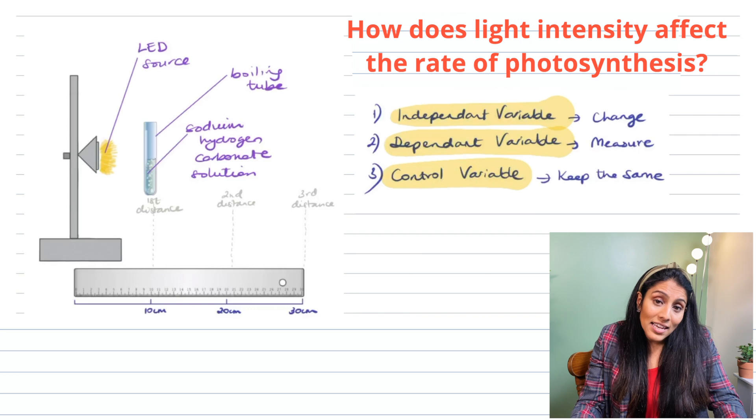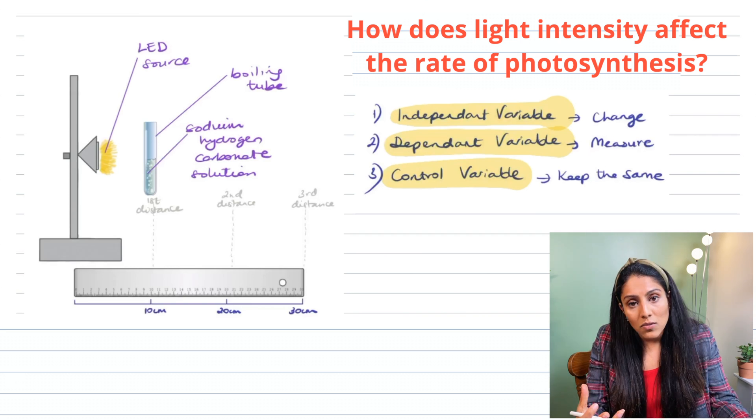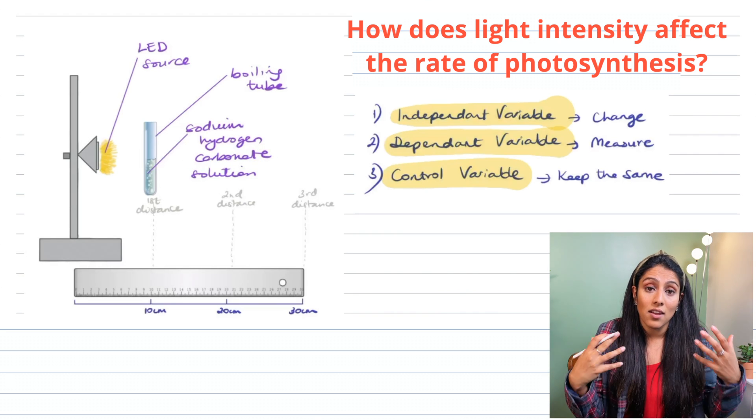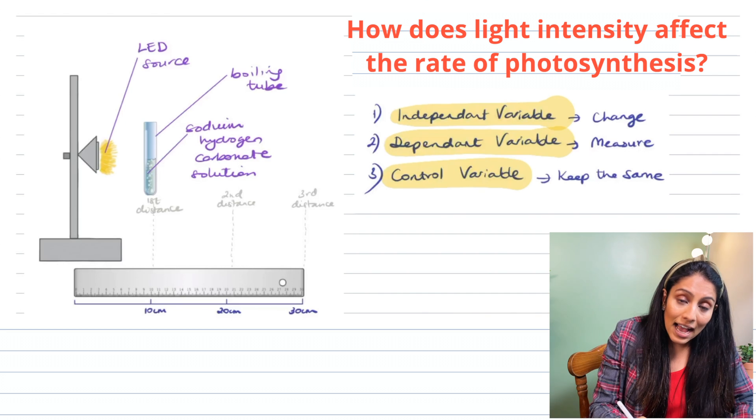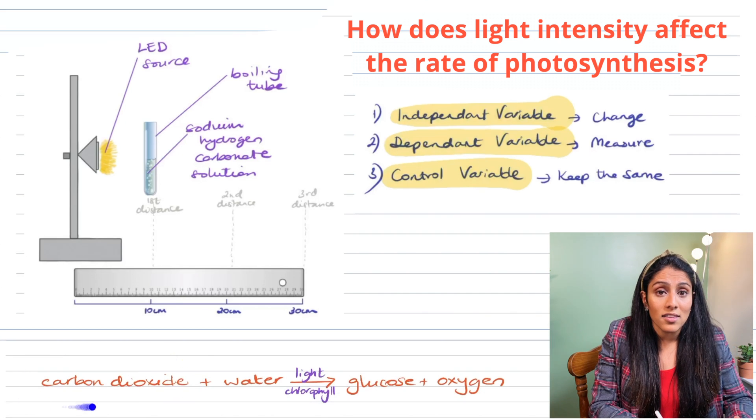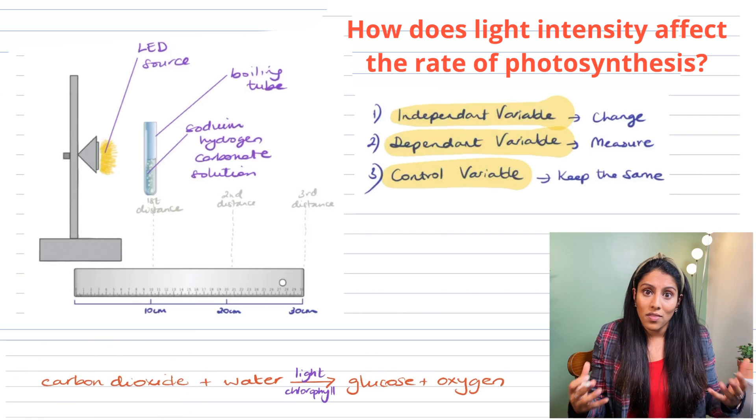So you can see in this experiment that we're using sodium hydrogen carbonate solution and the reason we do this is because the carbonate allows the pondweed to have enough carbon dioxide. How does that fit into the equation? Well you can see here photosynthesis will only happen if carbon dioxide is there so we don't want that to be lacking.